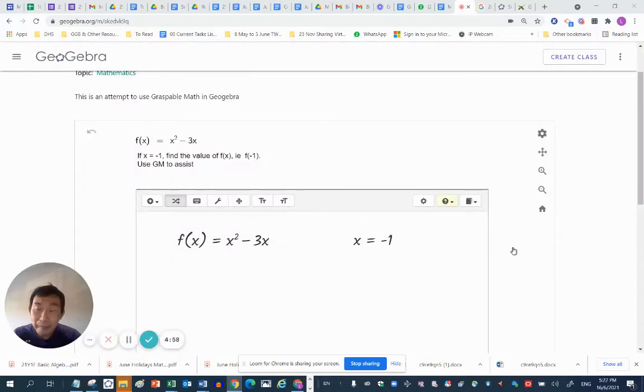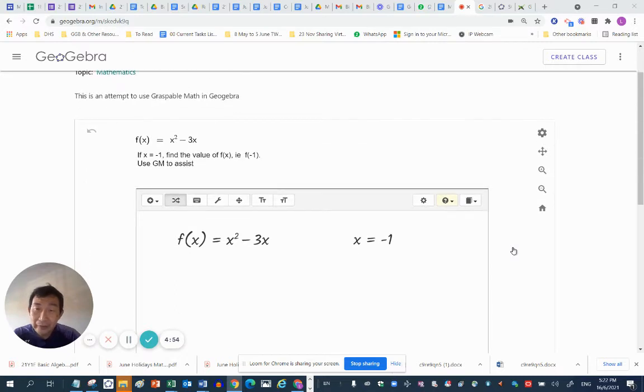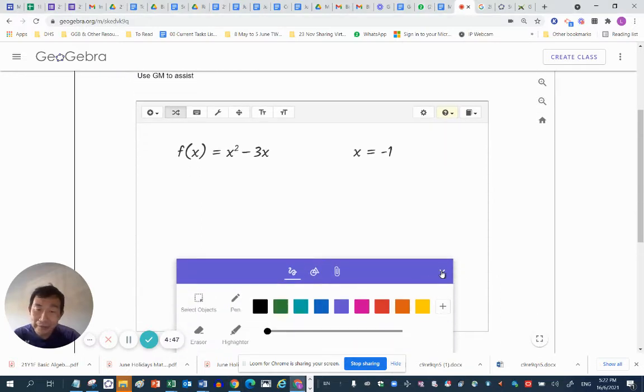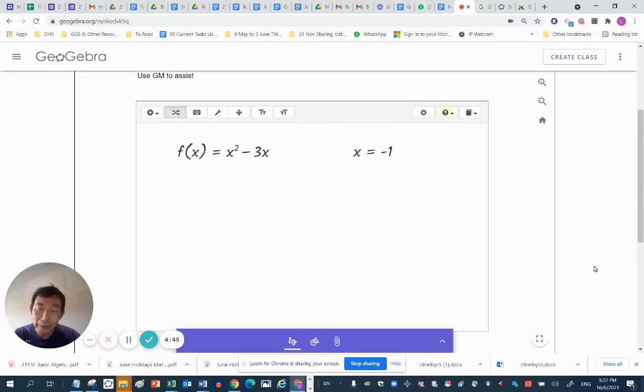This is an example of a graspable mass canvas inside a GeoGebra activity. More specifically, it's actually inside a GeoGebra node. You can see that this is a GeoGebra node. This is the typical interface for GeoGebra nodes.